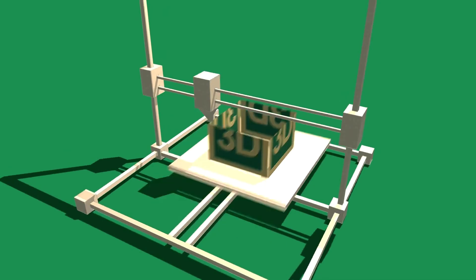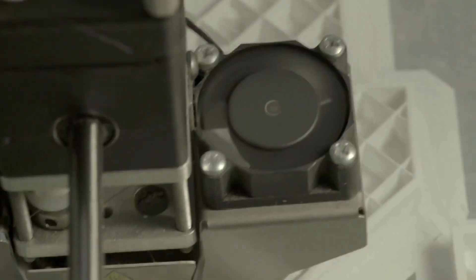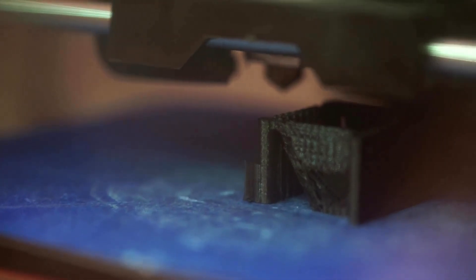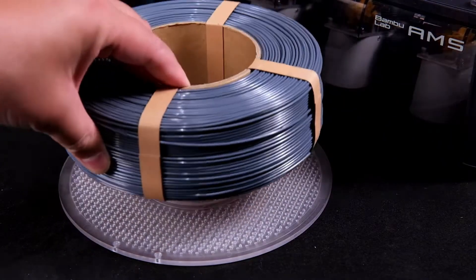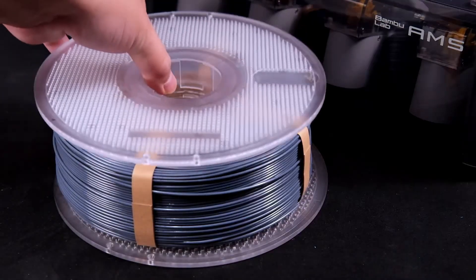Next, a huge difference is their mechanical properties. PLA is hard and has a high degree of stiffness, which is great for parts requiring precision and rigidity. However, it is also more brittle, which can lead to cracking or breaking under stress.